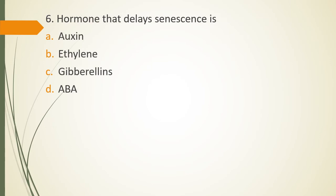Question 6, hormone that delays senescence is Option A, auxin, Option B, ethylene, Option C, gibberellin, Option D, ABA. The correct answer is Option C, gibberellins delay the senescence.